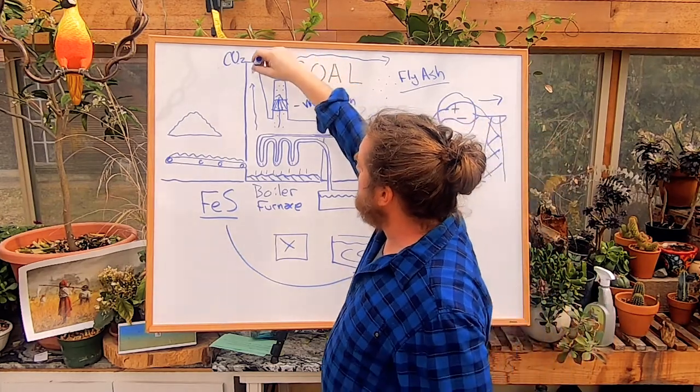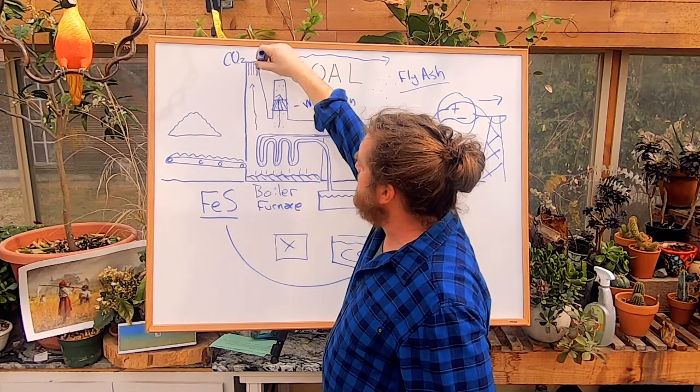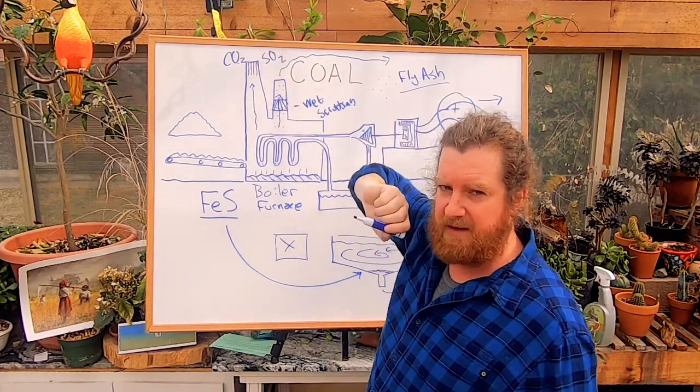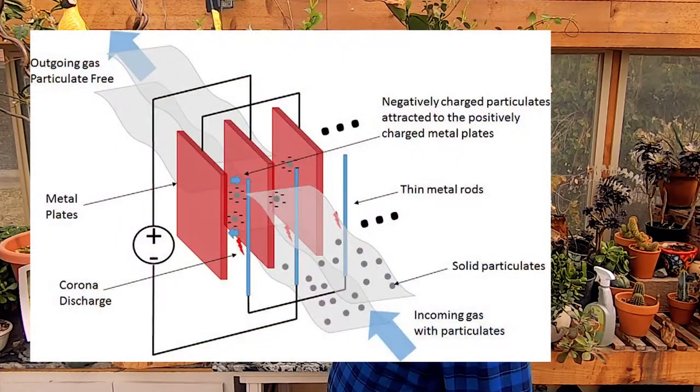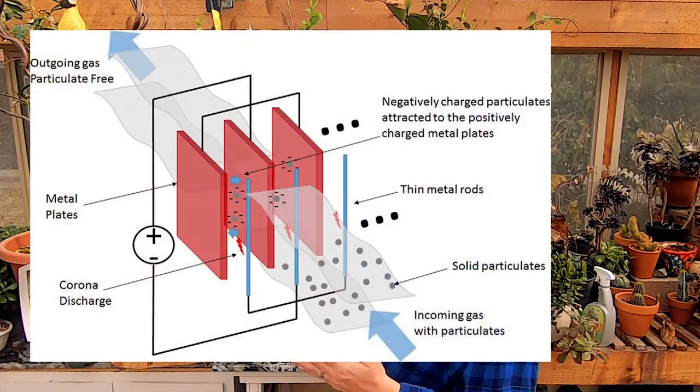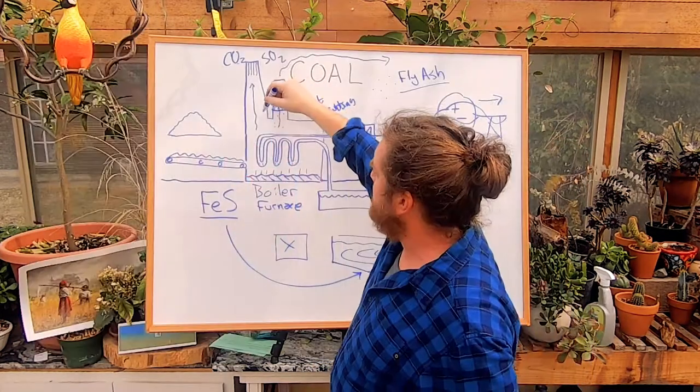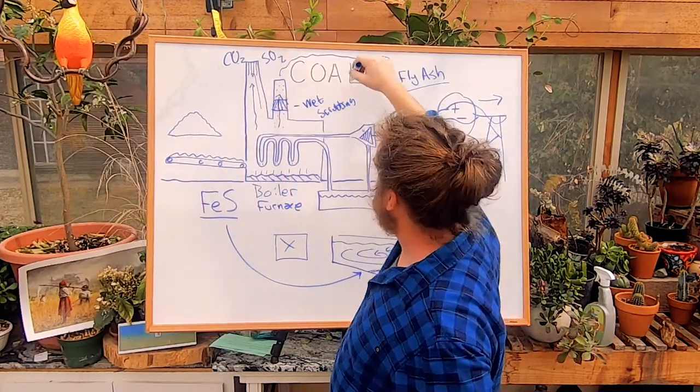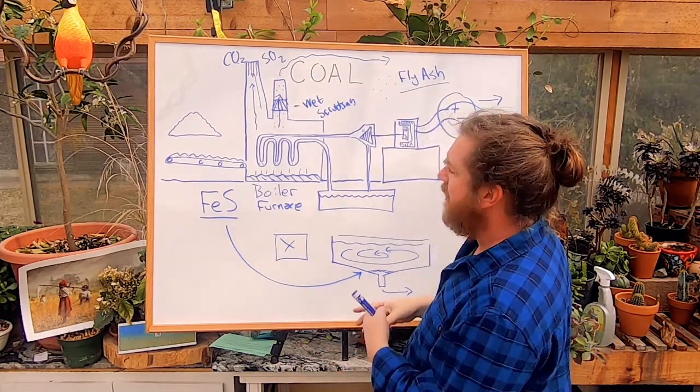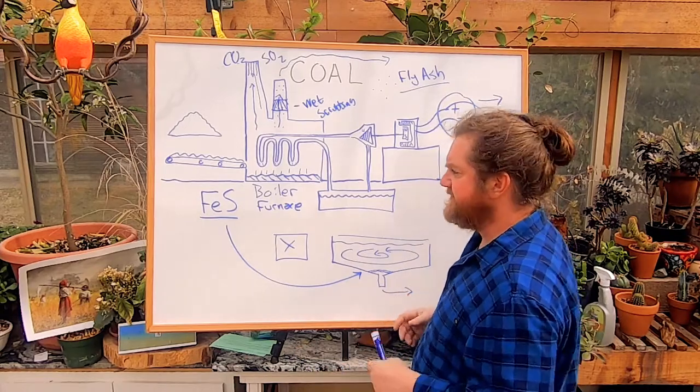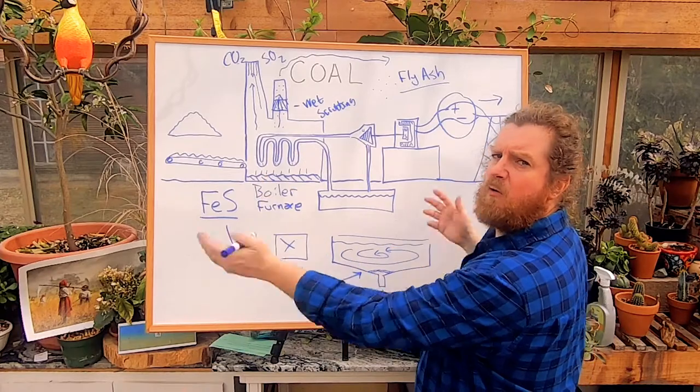Another thing that we do is we can add these almost like very similar to the Dyson blade air filter, these metal blades that have an electrical charge, and those actually draw particles, particularly fly ash. Those are what we call electrostatic precipitators. All of those things add cost to coal, but this is how it all works.